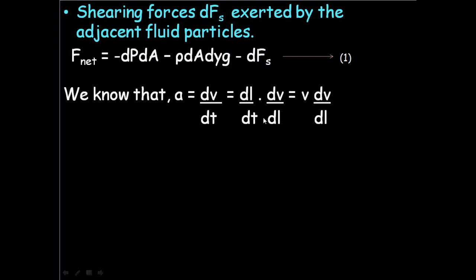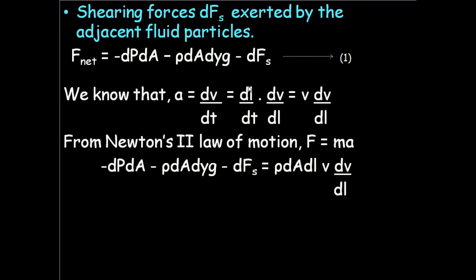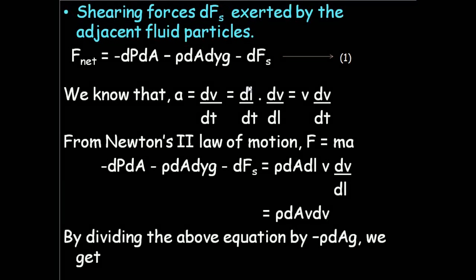We know that acceleration is given by the rate of change of velocity, which can further be written as dl over dt into dv over dl by chain rule, and the rate of change of length is velocity again. So acceleration can also be written as v into dv over dl. From Newton's second law of motion, we have F equals ma.